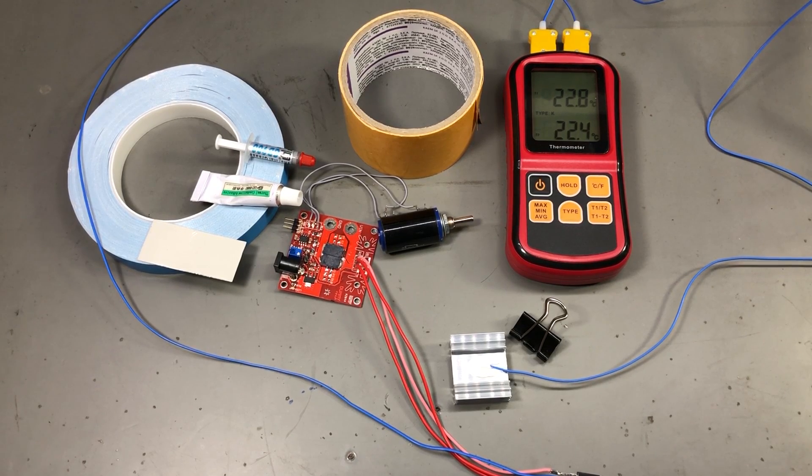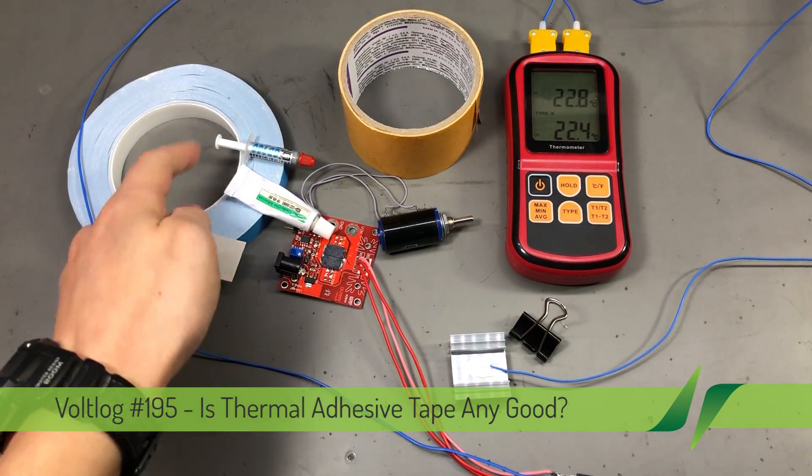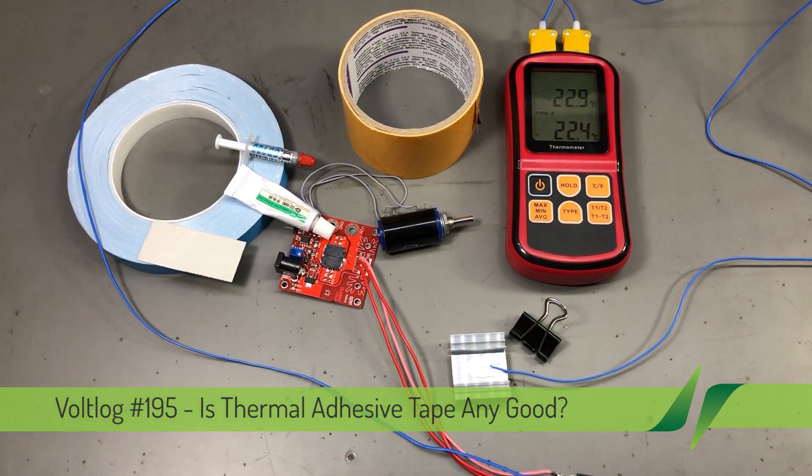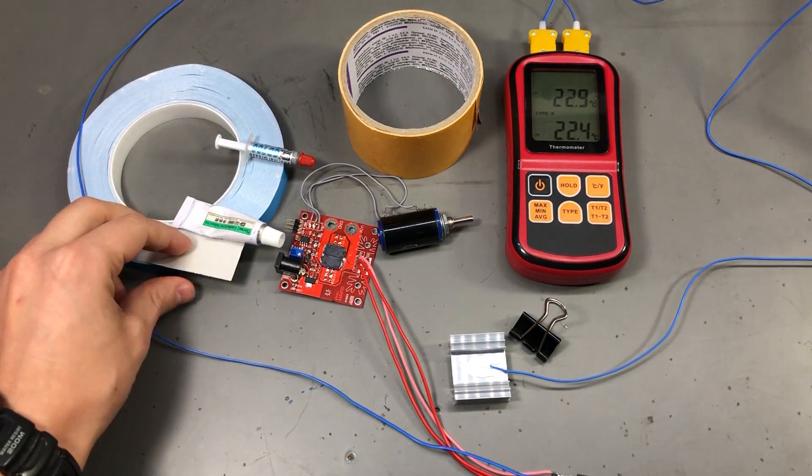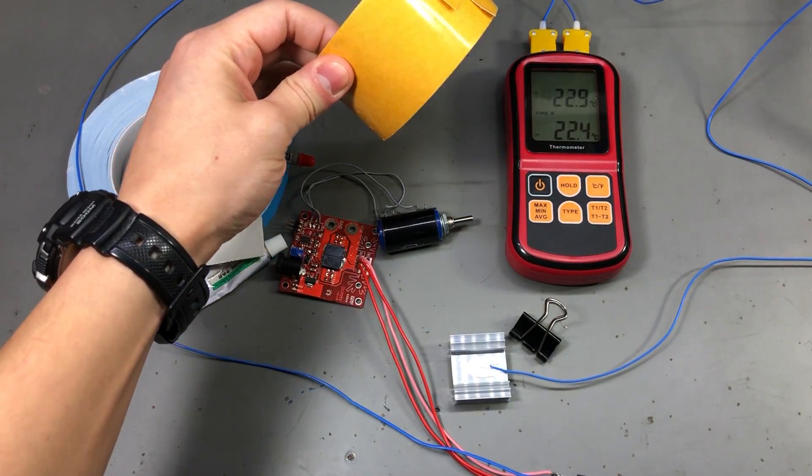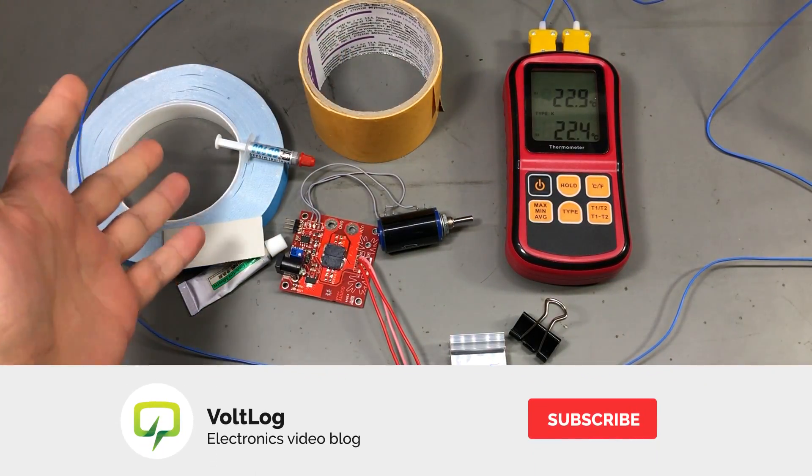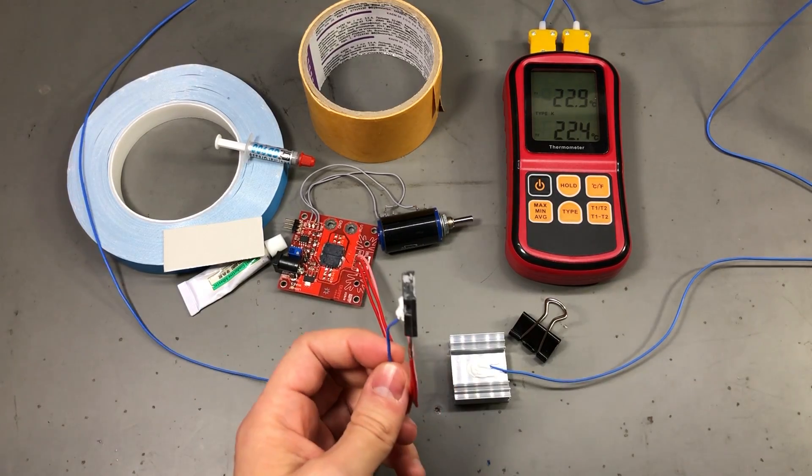Welcome to a new vlog. Today we're going to be testing and comparing thermally conductive double-sided tape to other solutions like thermally conductive adhesive, silicon pads, or even regular double-sided tape to see how effective these solutions are for transferring heat between an IC and a heat sink.